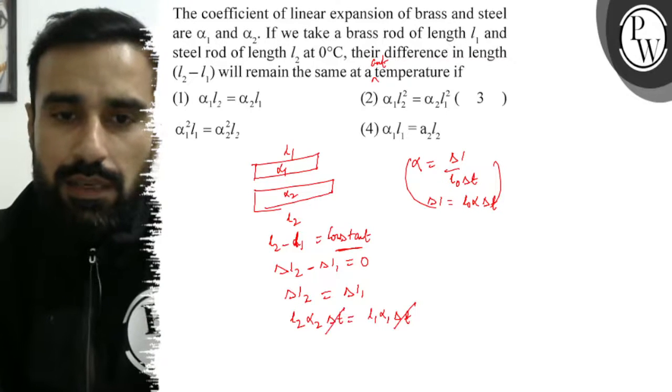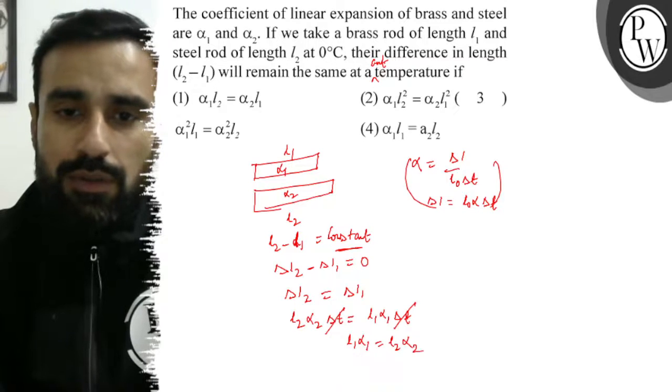Delta T cancels out. Therefore, we have L1 alpha 1 must equal L2 alpha 2. This is the relation.